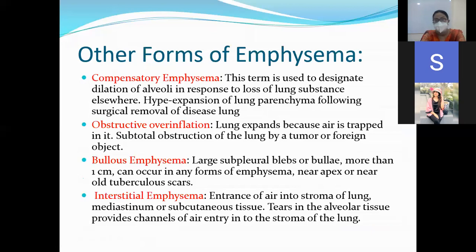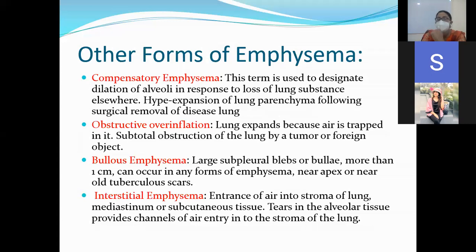There are other forms of emphysema. Compensatory emphysema is a term used to designate dilatation of the alveoli in response to loss of lung — hyperexpansion of the lung parenchyma following surgical removal of a diseased lung. Obstructive or over-inflation occurs when air is trapped inside the lung due to obstruction. Bullous emphysema involves large subpleural blebs or bullae, more than one centimeter, and can occur in any form of emphysema near the apex. Interstitial emphysema involves entrance of air into the stroma of the lung, mediastinum, or subcutaneous tissue through tears in the alveolar tissue.